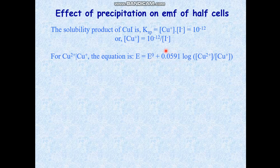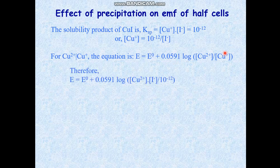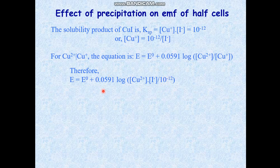The Nernst equation for the cupric/cuprous system is: E = E° + 0.0591 × log([Cu²⁺]/[Cu⁺]), where cupric ion is the oxidant and cuprous ion is the reductant (0.0591 at 25°C, divided by 1 for one electron). Substituting [Cu⁺] = 10⁻¹²/[I⁻], the iodide ion concentration moves to the numerator and 10⁻¹² remains in the denominator. This 10⁻¹² term is separated out from the logarithmic expression and merged with the E° value to give a new formal potential, E°'.